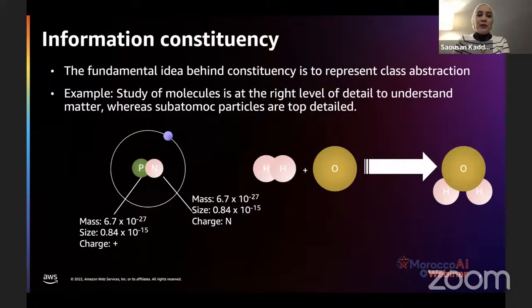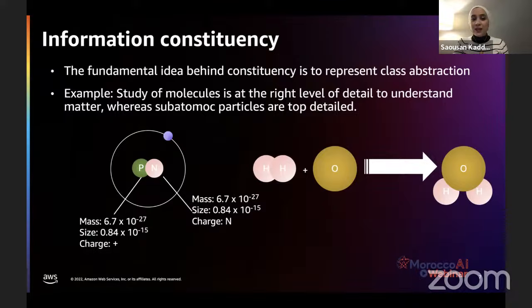The fundamental concept behind explainability is information consistency. For example, I can give you the mass, size, charge, and many physical and chemical factors about molecules, but this is not enough to explain what a water molecule is — we need consistency in the information to move from disparate parts to something meaningful. This is the fundamental idea behind explainability: moving to a class abstraction of smaller parts to reach an idea that a human can understand.